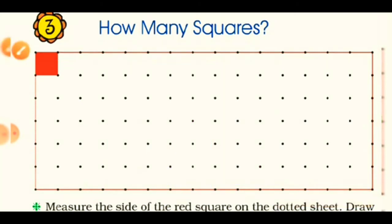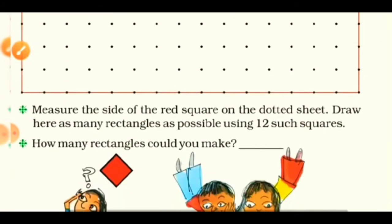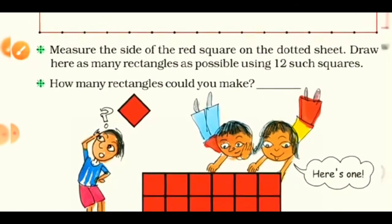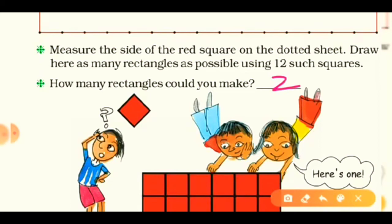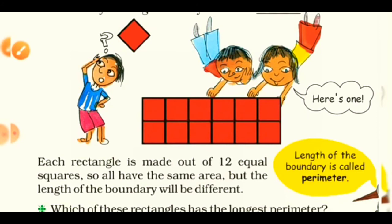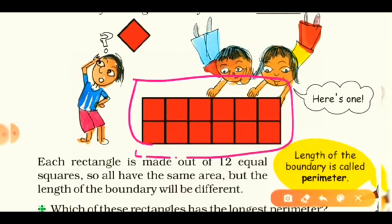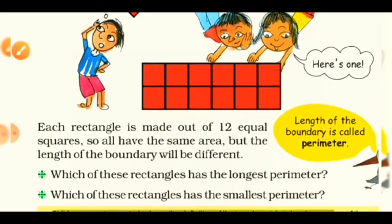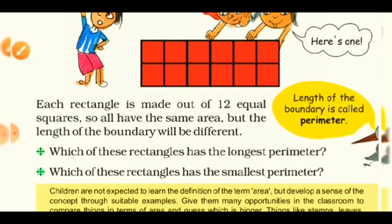You can make as many rectangles as possible using 12 squares. We could make at least two rectangles, but you can make more than two. Each rectangle is made out of 12 equal squares, so they all have the same area.